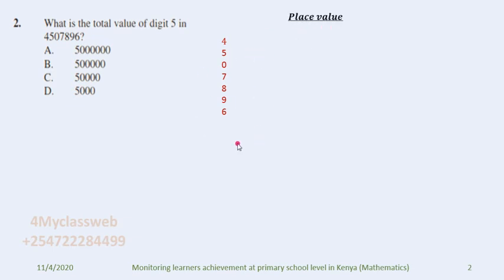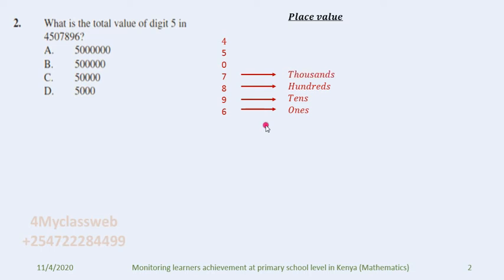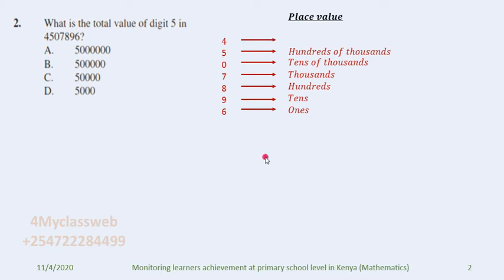The candidate should remember the place value of each digit. Starting with digit six, it occupies the place value of ones; digit nine is in tens; eight is in hundreds; seven is in thousands; zero is in tens of thousands; five is in hundreds of thousands — and this is the digit whose total value we need to find — and four is in millions.